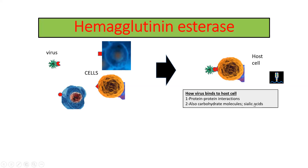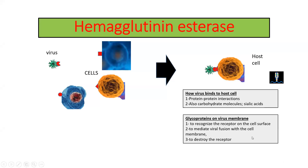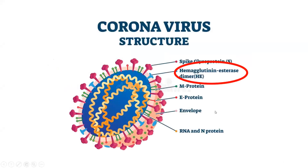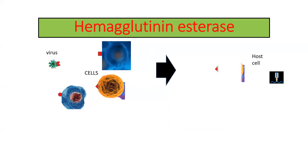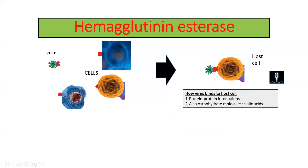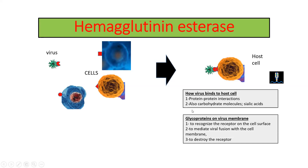Glycoproteins on the virus membrane. The spike proteins and the hemagglutinin esterase dimer are the glycoproteins of coronavirus. Glycoproteins are proteins that have carbohydrate in the side chain — here is the carbohydrate, here is the protein. What do glycoproteins do to recognize the receptor on the cell surface? First, as you see, the receptor on the cell surface is recognized by the glycoprotein of the virus.